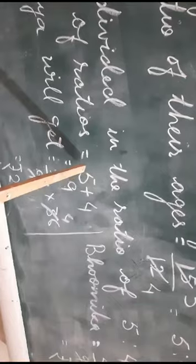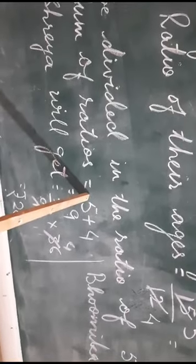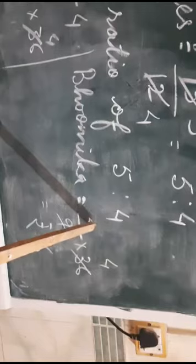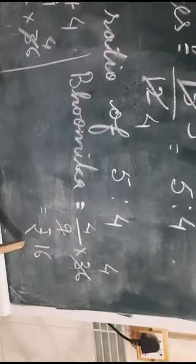Then we take the sum of the ratios, which will be equal to 9. Shreya will get, because it is in the ratio of 5, 5 upon 9 into the money to be divided. It will be 20 rupees. Bhumika will get 4 upon 9 into 36, which is 16 rupees.